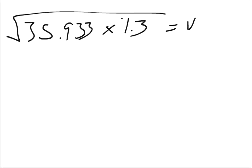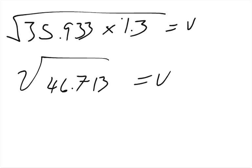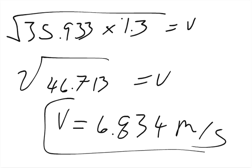35.933 times 1.3, I'm going to plug that into my calculator. The square root of 46.713 equals v. I'm going to take the square root of that. And that v equals 6.834. This is meters per second. So the speed of the puck is traveling 6.834 meters per second.